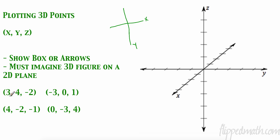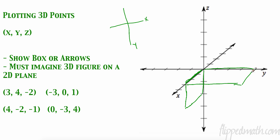For the box method, I'll go to 3 on my x-coordinate: one, two, three. Then I go four on my y, drawing this like a parallelogram: one, two, three, four. Now I draw a three-dimensional box. My z is negative two, so I go down two on all of these — one, two — forming this parallelogram.